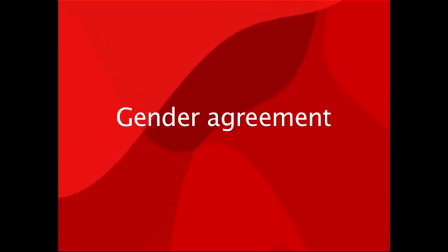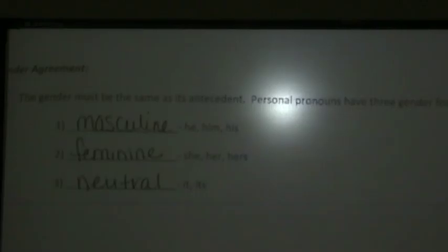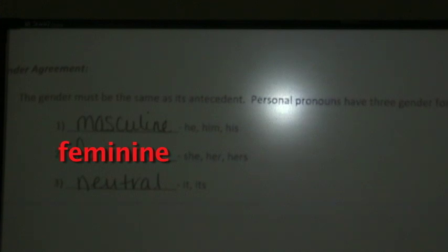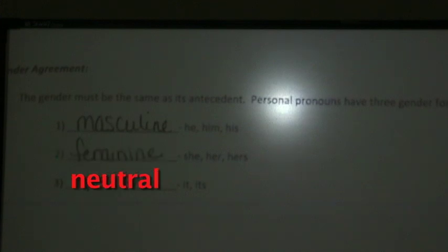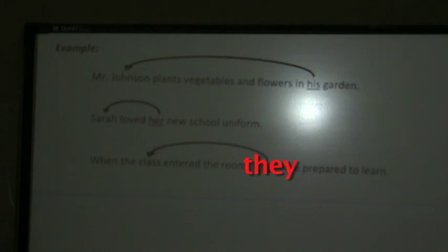Now we're on to the gender agreement. The gender must be the same as its antecedent. Personal pronouns have three gender forms: masculine, where we use he, him, or his; feminine, where we use she, her, or hers; and neutral, using it or its. Under gender agreement examples: Mr. Johnson plants vegetables and flowers in his garden — his is talking about Mr. Johnson. Sarah loved her new school uniform — her is talking about Sarah. When the class entered the room, they were prepared to learn — they is talking about the class.